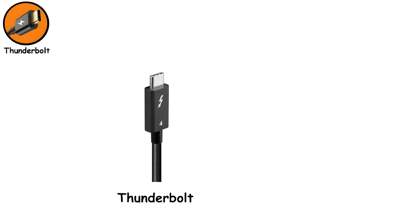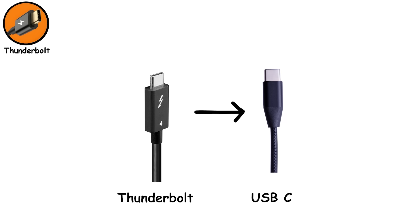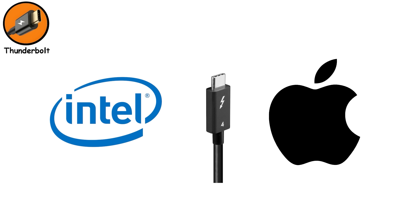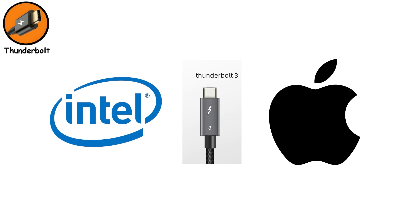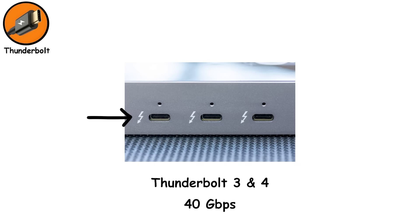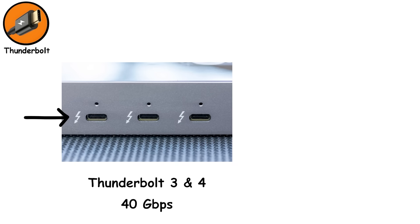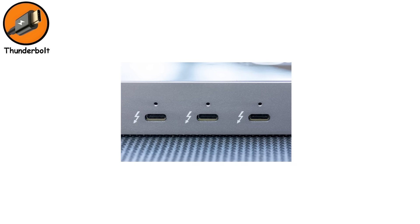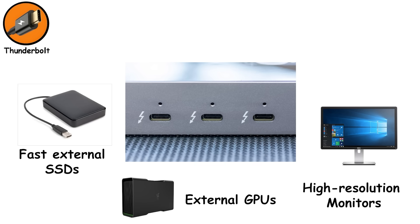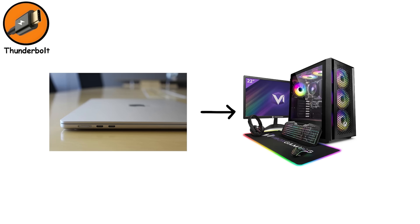Thunderbolt is the connector that looks exactly like USB-C but secretly does way more behind the scenes. Developed by Intel and Apple, starting from Thunderbolt 3, it uses the same USB-C shape — which is why so many people confuse the two. The easiest way to tell them apart: if you see a small lightning bolt symbol next to the port, that's Thunderbolt. Thunderbolt 3 and Thunderbolt 4 both run at 40 gigabits per second. They can handle high-resolution monitors, fast external SSDs, and even external GPUs, letting thin laptops suddenly act like desktop gaming PCs.